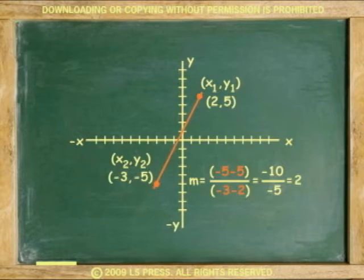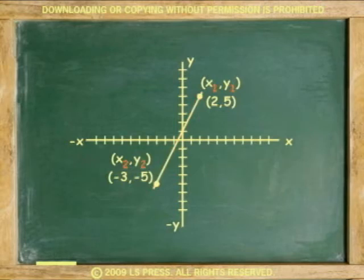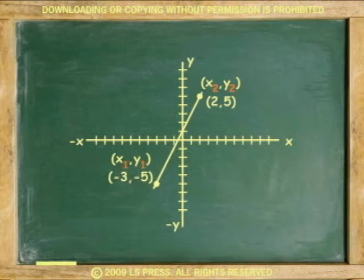Divide. The slope is positive 2 or 2 over 1. It doesn't matter which point is labeled 1 or which point is labeled 2, as long as we don't mix the coordinates. Doing it backwards, you get the same result: 5 minus negative 5 equals 10 over 2 minus negative 3 equals 5. 10 divided by 5, you still get 2.